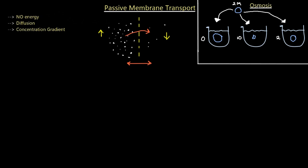Now I also wanted to discuss the process of osmosis. Osmosis is basically the passive diffusion of water — so we're concentrating on H₂O here. This illustration depicts the different scenarios in which osmosis would occur.